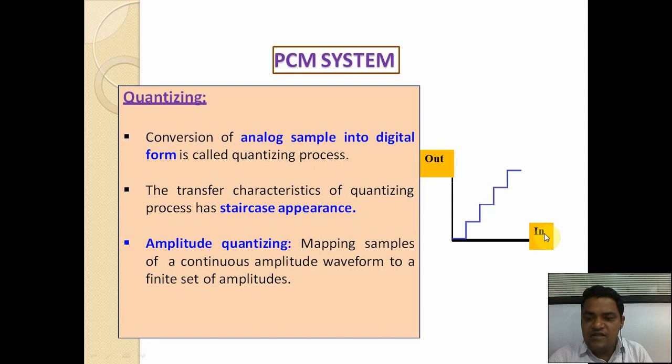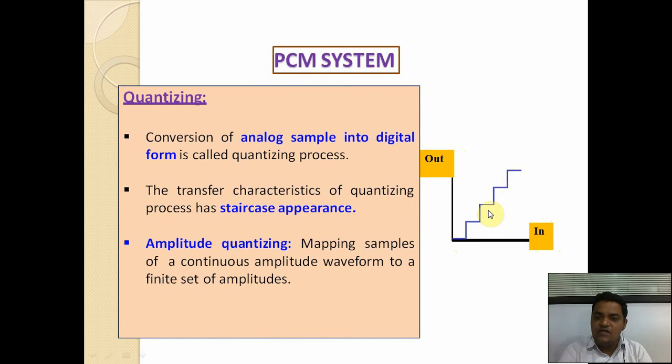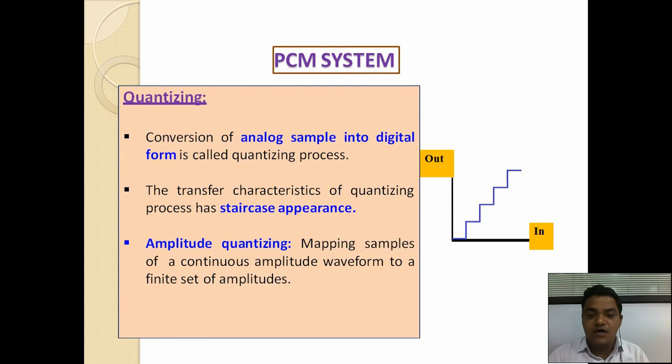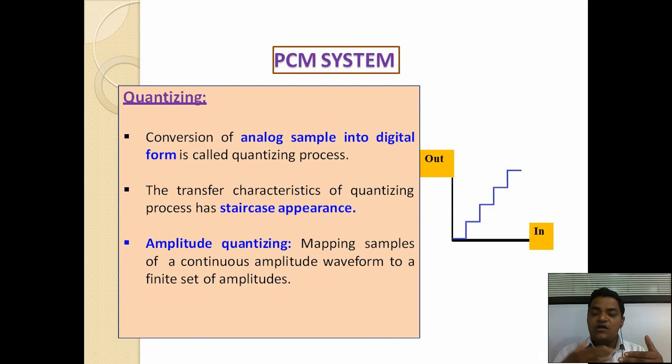From the input-output figure, the transfer characteristics of the quantizing process show a staircase appearance — just like a staircase. Amplitude quantizing is the mapping of samples of a continuous amplitude waveform to a finite set of amplitudes. The transfer characteristics of the quantizing process increase in the form of a staircase appearance.